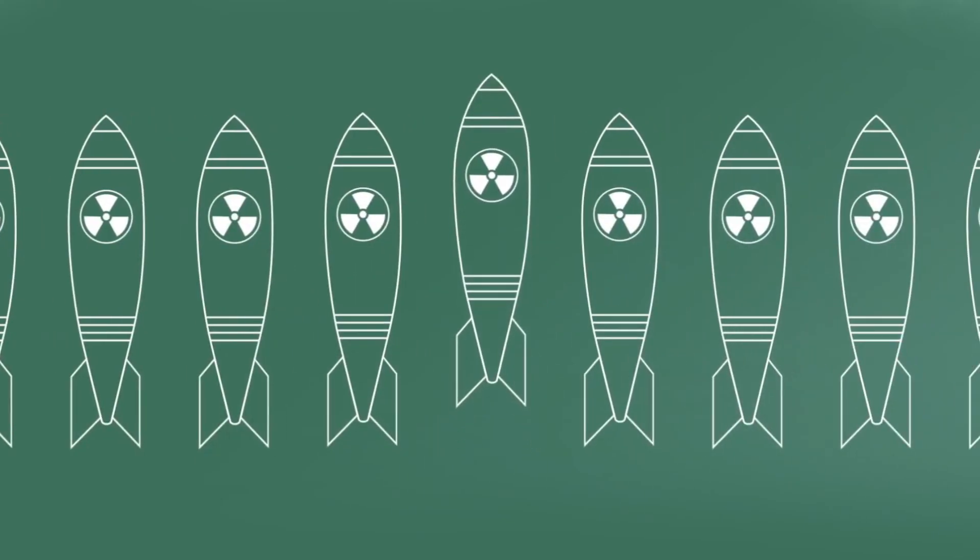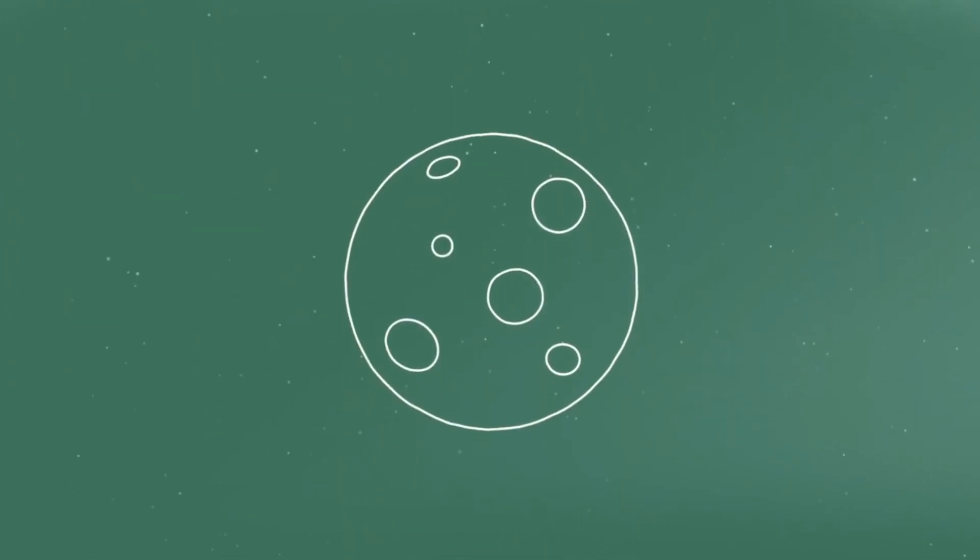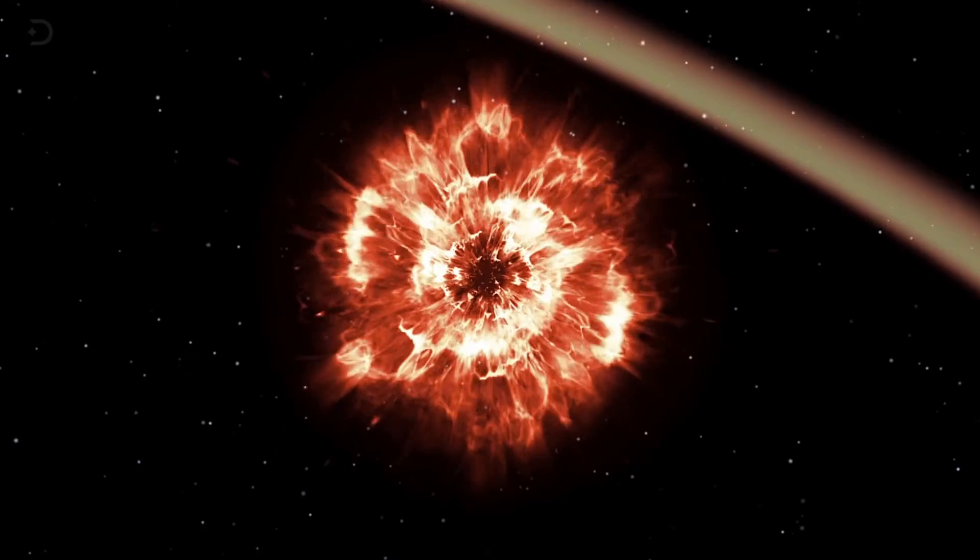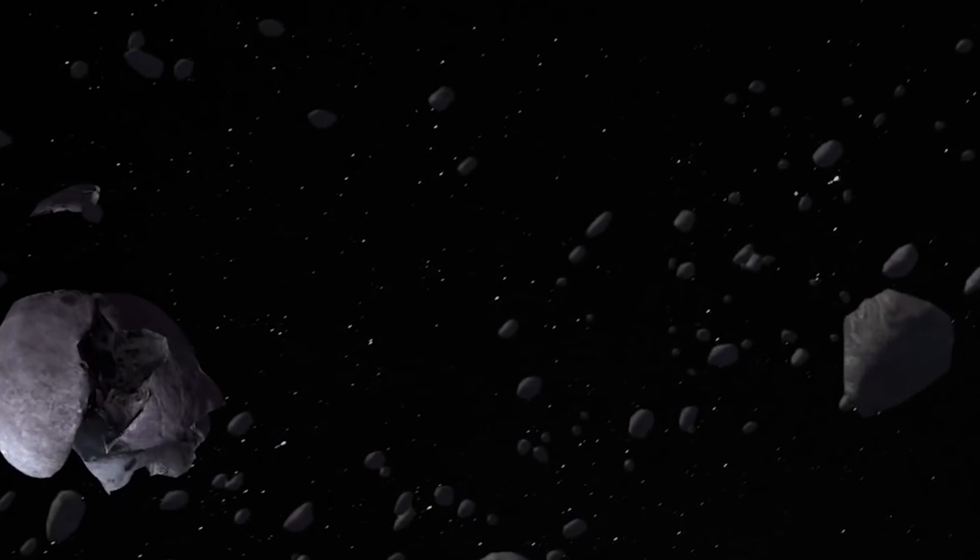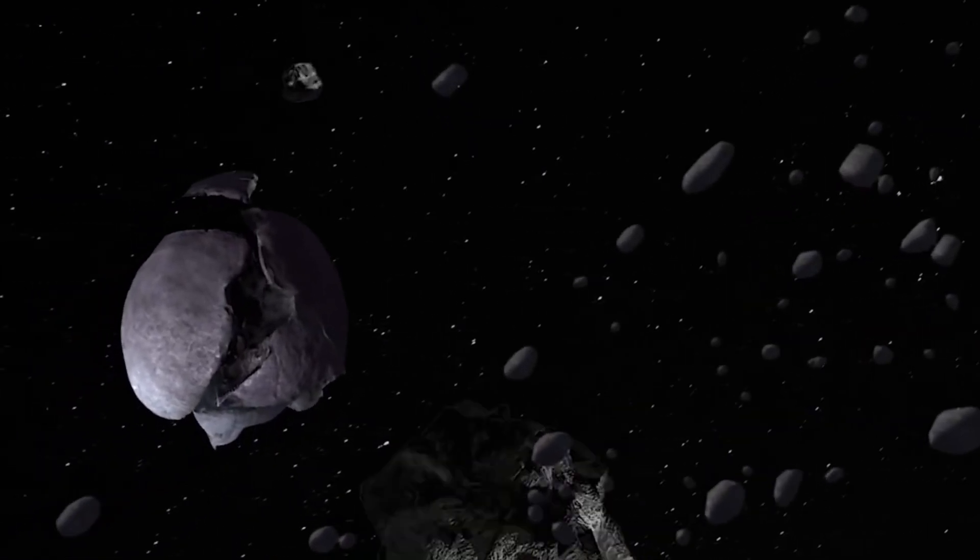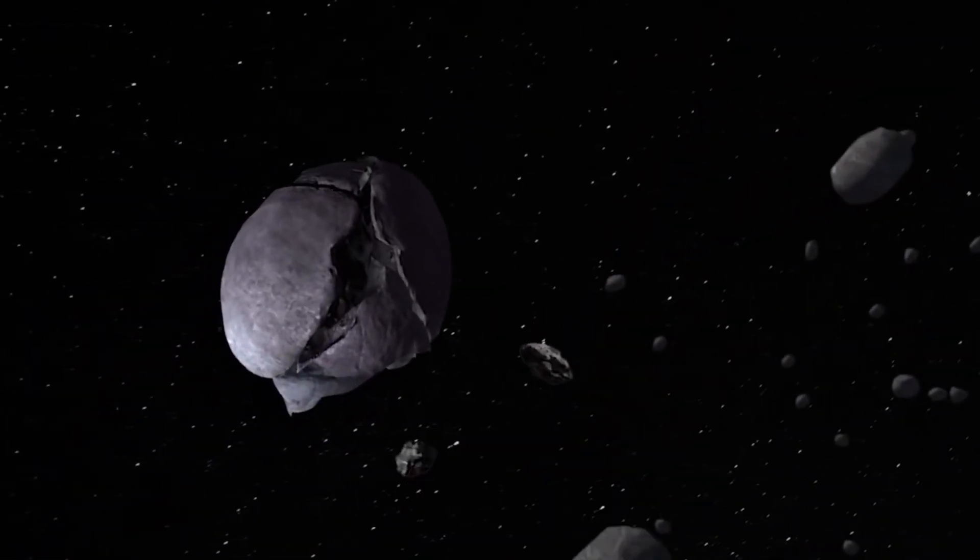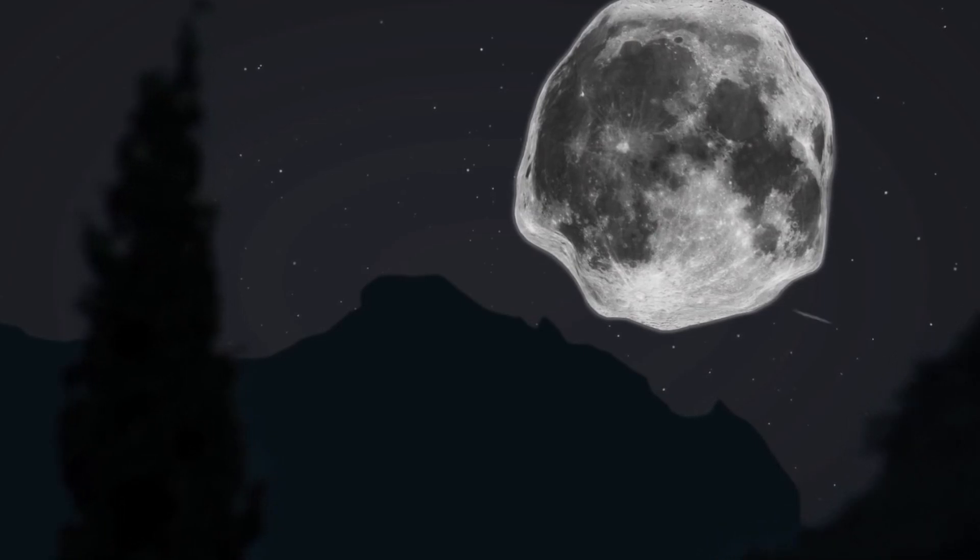At present, even if we combined all our nuclear capabilities, we wouldn't have quite enough power to completely obliterate the Moon. The worst we could likely do is break it into several large pieces that would eventually come together, due to gravitational forces, although it would look quite different in our night sky.